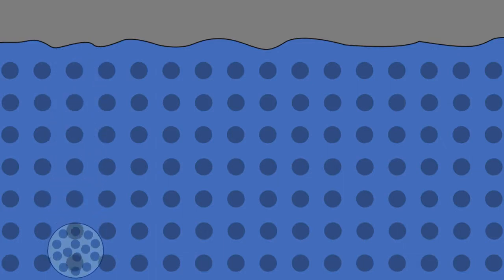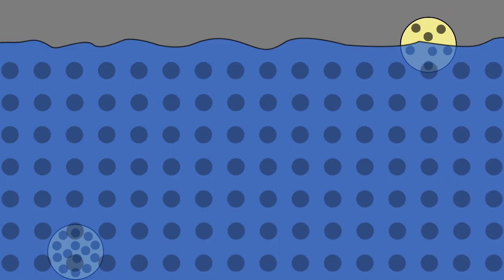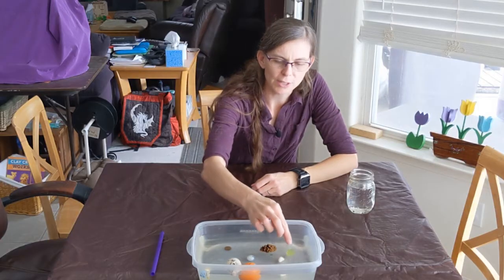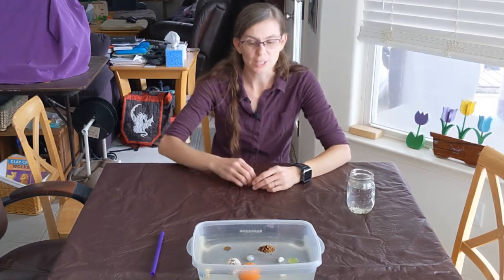Objects will float if they are less dense than whatever it is that they are in. So here we are comparing the density of these objects to the density of water. The ones that are more dense than water — that have more stuff packed into a space than water — are the ones that sink. The ones that are less dense than water float on top. If an object's density is about the same as that of water, it might barely float or barely sink. That's why you can sink in the bathtub but swim in a swimming pool, because your density is very similar to that of water.